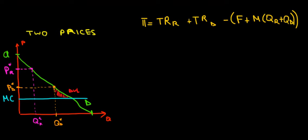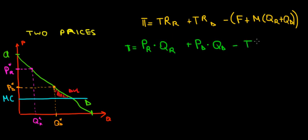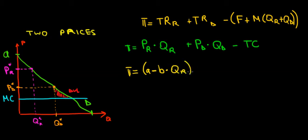Now let's work out the total revenues for each segment. Our profit equals the price we charge to the regular customers times the quantity we sell to the regular customers, plus the price charged to the discount customers times the quantity sold to the discount customers, minus total cost. The price for the regular customers follows a linear demand: intercept A minus slope B times QR, multiplied by QR.